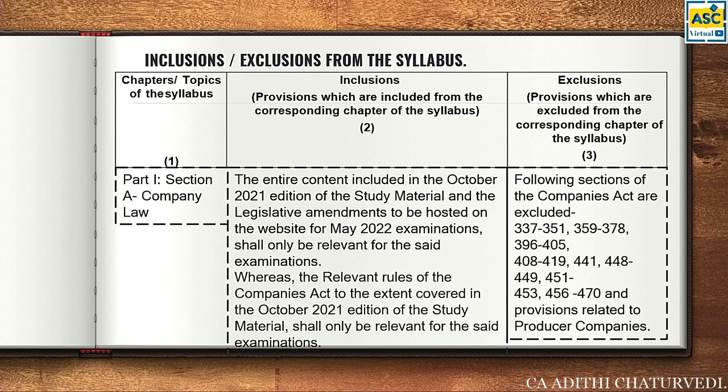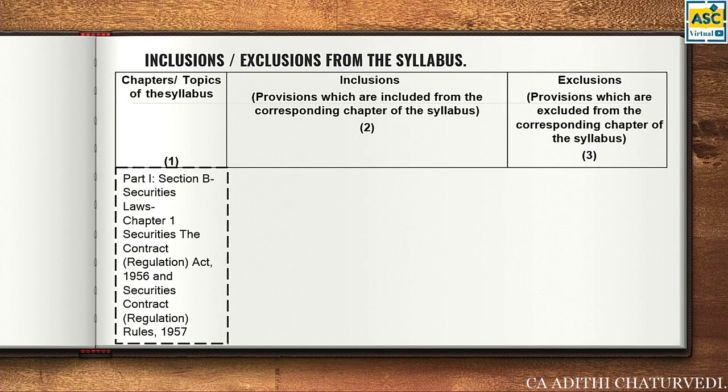For example, easiest excluded sections: Section 402, Sections 408 to 419 — these are NCLT constitution provisions and have not been taught because they were removed earlier. Producer company has not been taught because it was removed earlier. This is not something new that you have to unlearn — you have already not been taught all of this.